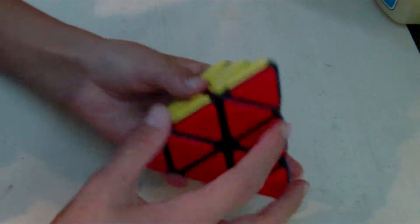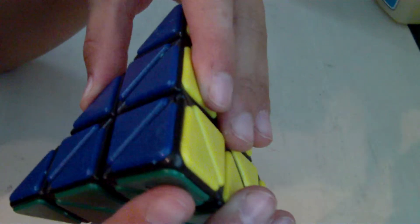Bad parts about this Pyraminx, specifically: this top, the red, yellow, and blue top, can come off. I'll have to super glue it because it bothers my timing.